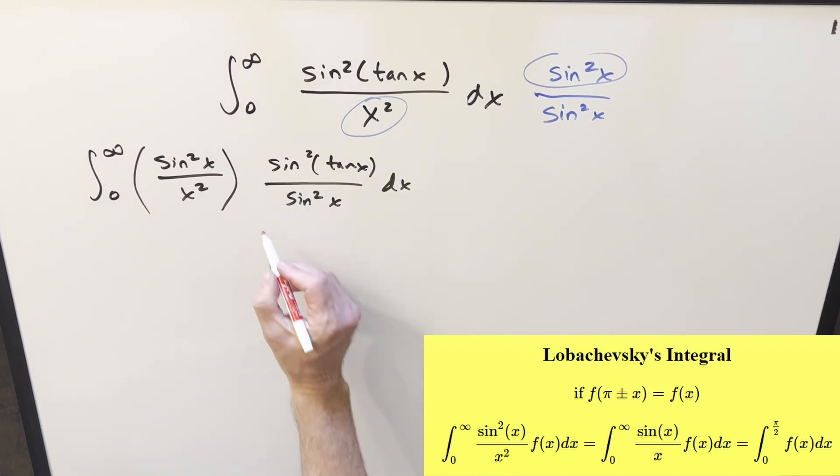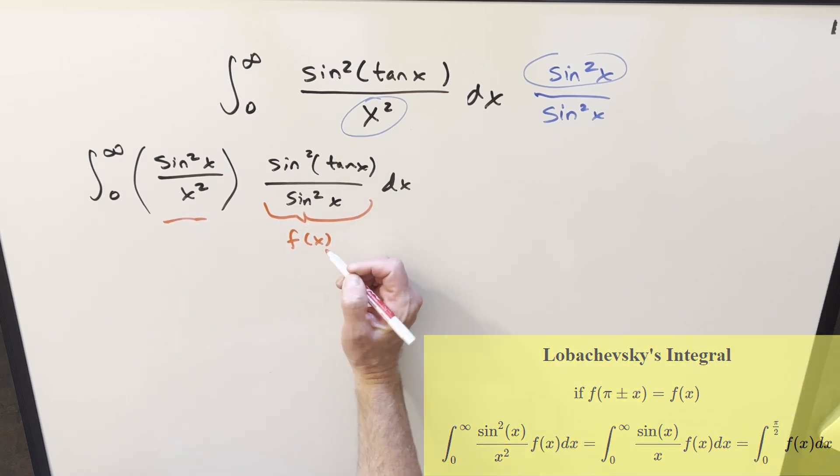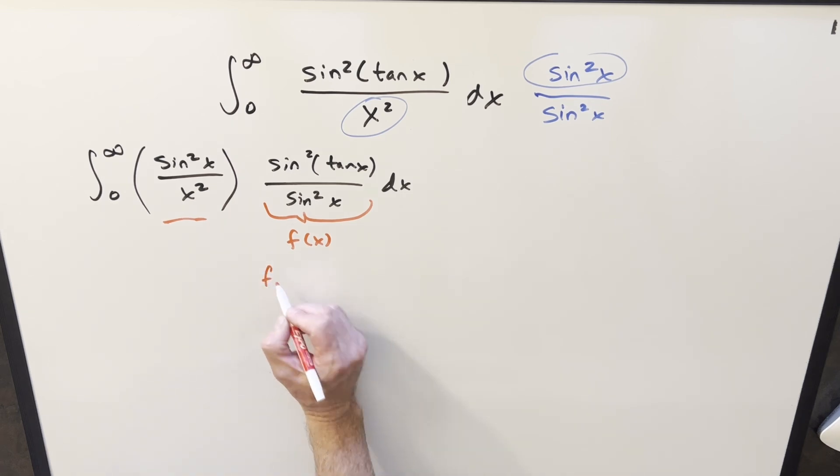Now to use the formula first, let's identify the f of x. It's going to be all this stuff we've got set up over here. So this is going to be our f of x and our check on this. We want this to be pi periodic, but we need to write it this way with the pi first.